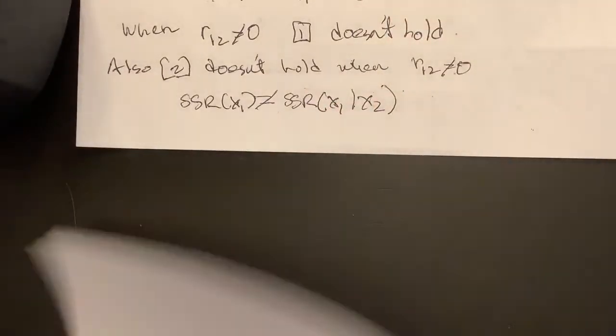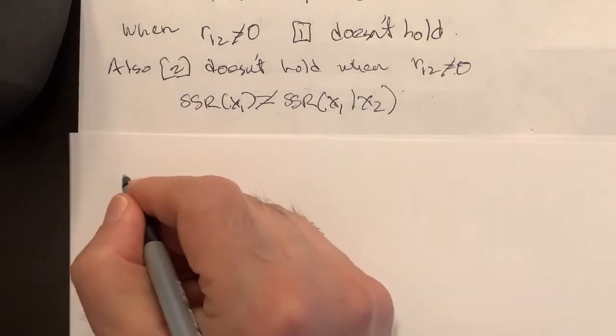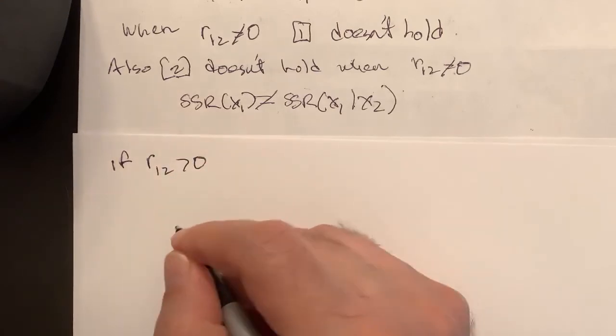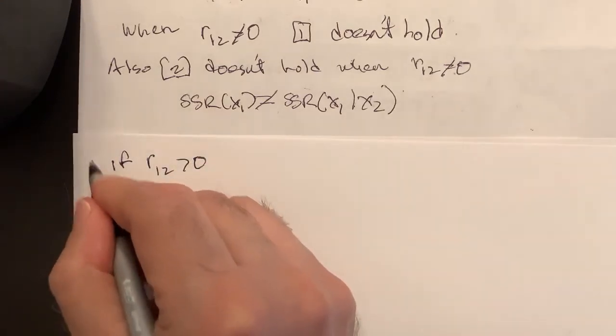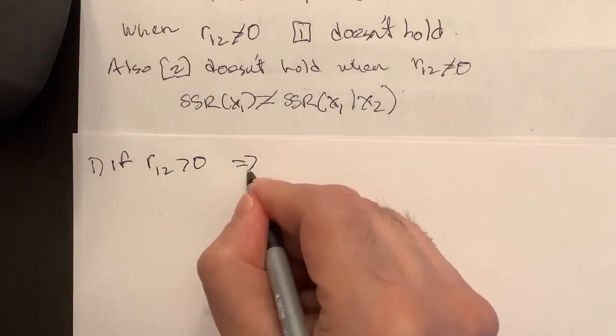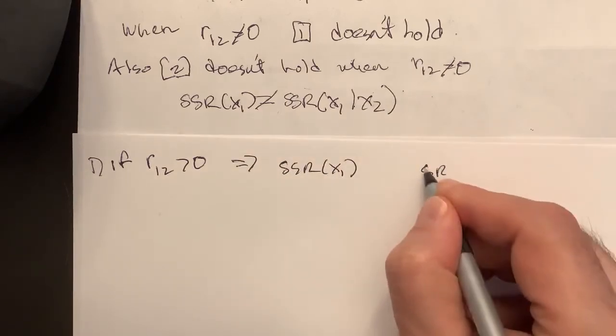Okay, in fact, if they're positively correlated, so if, then, so 1, if R12 is greater than 0, then SSR x1 will have this relationship.